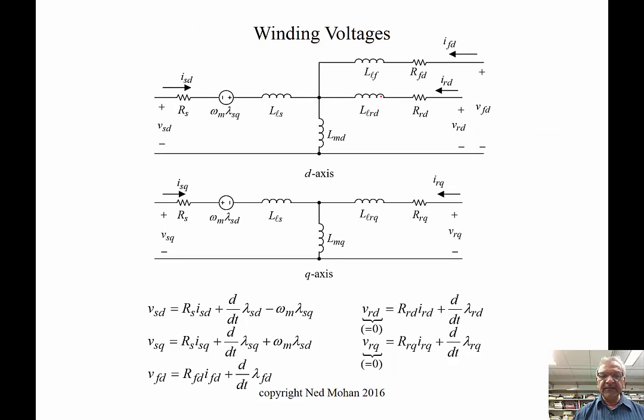We can do a very similar analysis as before—I won't go into the details, but it's very similar. We come up with this equivalent circuit in D-axis and Q-axis, which satisfies all the equations related to each axis. Vrd and VrQ are zero because these are for the damper windings, which are short-circuited at both ends.